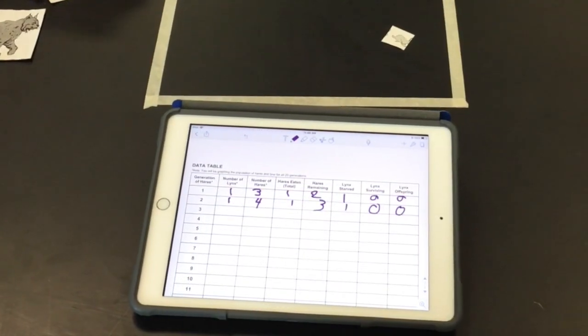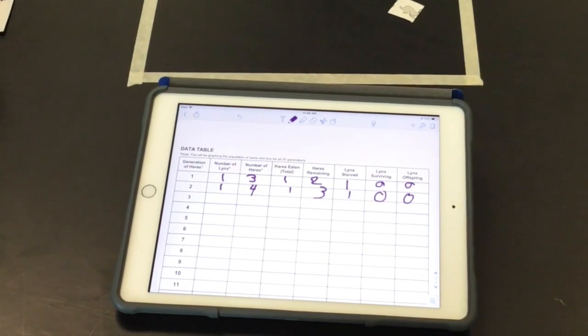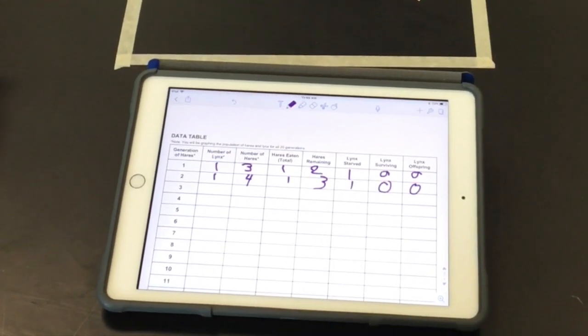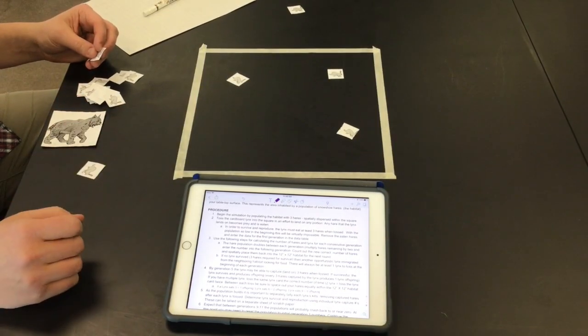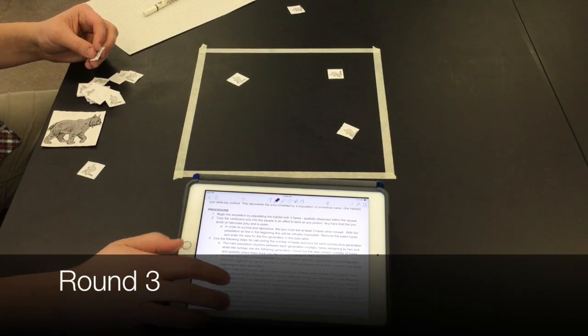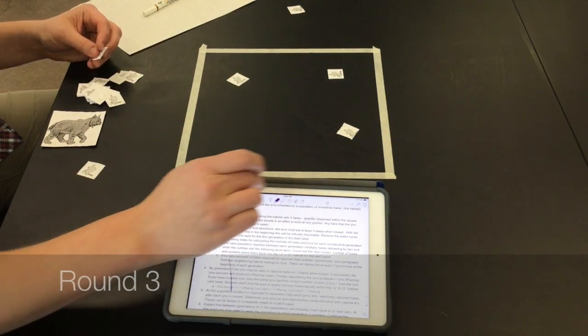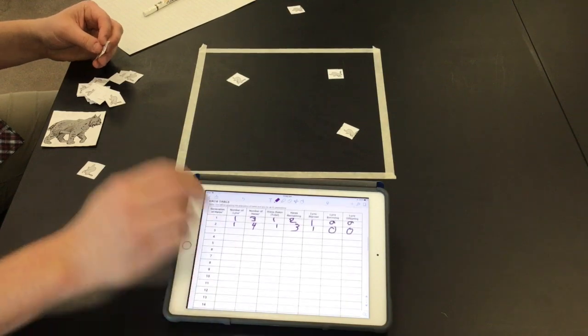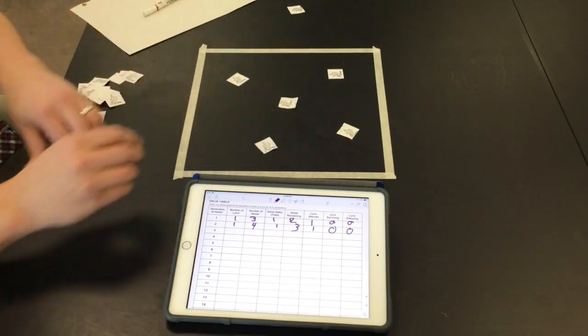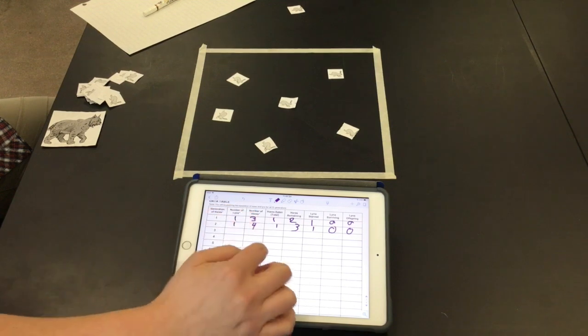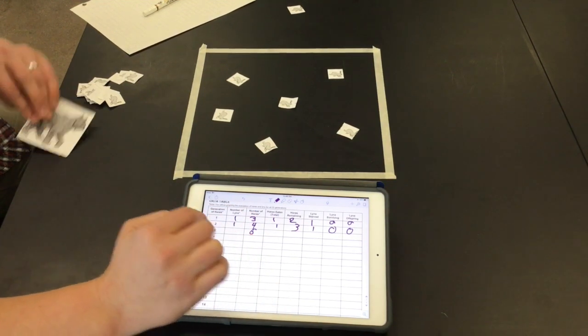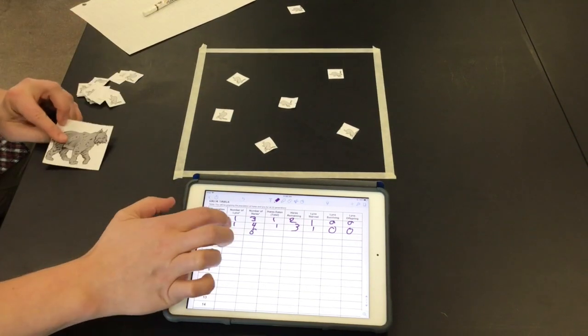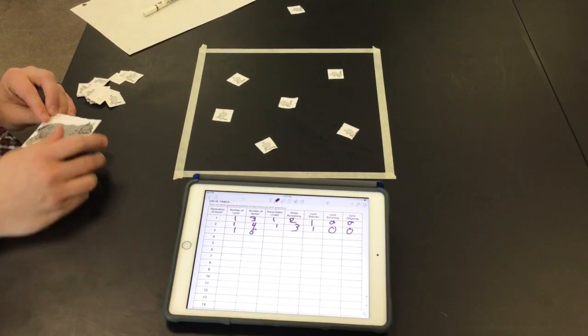All right, so again we had one lynx, four hairs, one was eaten, three remained and then the lynx starved. All right and then just kind of continue on. Basically next round, round three, we're going to double the hairs again. So we have three remaining so that doubles to six. And I'll show you here visually what that looks like on the data table. So we're going to get our six dispersed in here. So then we'll look at number of hairs that we start with. We're going to make sure we put down six before we start. Another lynx moved in from a neighboring habitat. So we'll change that to one. And then we'll run the simulation again.